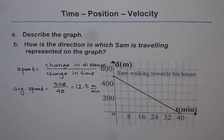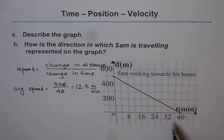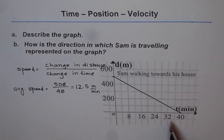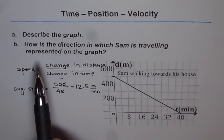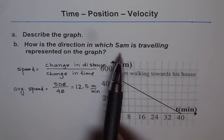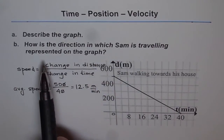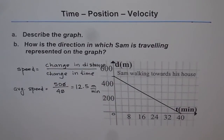It is very important to write a story mentioning most of the things given in the graph. Try to pull out most of the information from the graph and mention it in your story. Now let's go to Part B: how is the direction in which Sam is traveling represented on the graph?